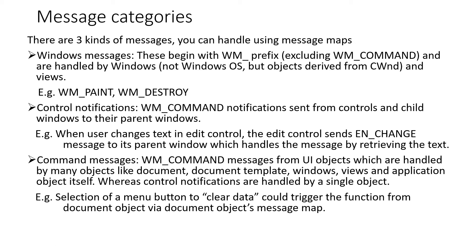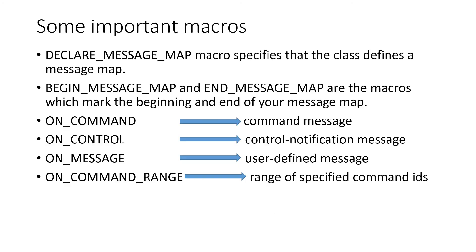Now let's see some important macros you should use when writing or declaring a message map. DECLARE_MESSAGE_MAP specifies that a class has a message map. BEGIN_MESSAGE_MAP and END_MESSAGE_MAP mark the beginning and end of your message map. ON_COMMAND is used for handling command messages, ON_CONTROL is for control notification messages, ON_MESSAGE is for user-defined messages, and ON_COMMAND_RANGE handles a range of commands in one go.